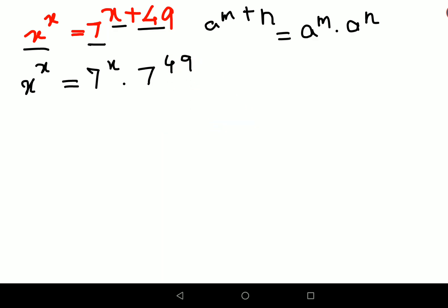Now understand, in order to solve any of these kind of problems, we will try to keep all the variables on one side. So we will divide both sides by 7 raised to x. So this is getting cancelled. This can be written as x upon 7 the whole raised to x, and this is 7 raised to 49.